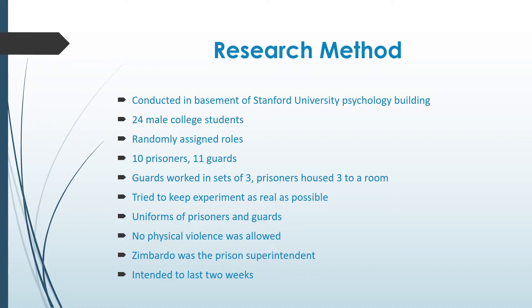Once there, the prisoners were stripped naked and had all their personal belongings locked away. They were given bedding and a prison uniform with their personal identification number on it. The uniforms with ID numbers were used to de-individualize the prisoners. All guards wore khakis, special sunglasses so eye contact with prisoners was impossible, a whistle around their neck, and billy clubs borrowed from the police.